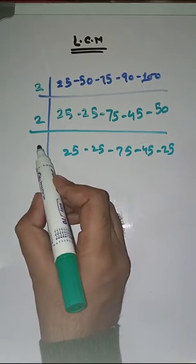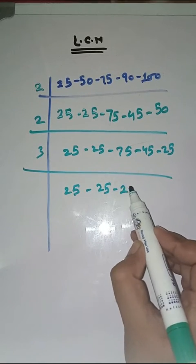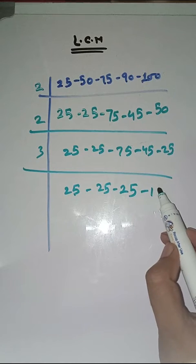Now with 3. 25 as it is, 25 as it is, 3 25's are 75, 3 15's are 45, 25 as it is.